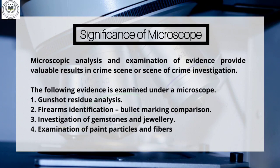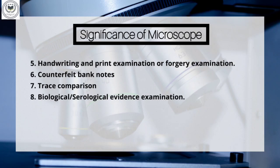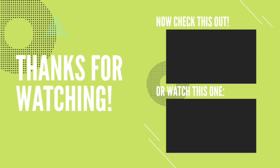Now let's talk about the significance of microscope in forensic science. Microscope analysis and examination of evidence provide valuable results in crime scene investigation. The following evidence is examined under a microscope: 1. Gunshot residue analysis, 2. Firearms identification, 3. Identification or investigation of gemstones and jewellery, 4. Examination of paint particles and fibre, 5. Handwriting and print examination or forgery examination, 6. Counterfeit banknotes, 7. Trace comparison, 8. Biological and serological evidence examination. With this we come to an end of the video. Thank you.